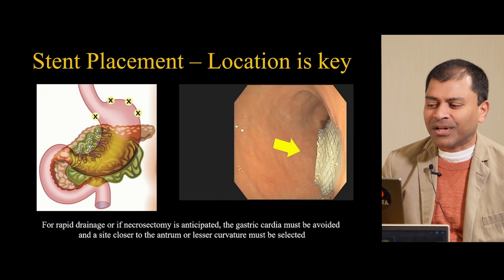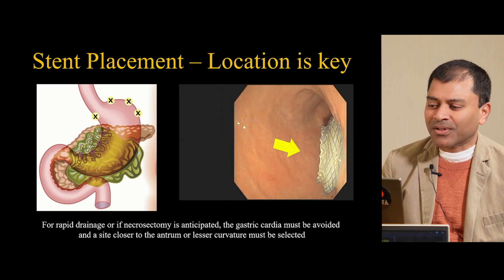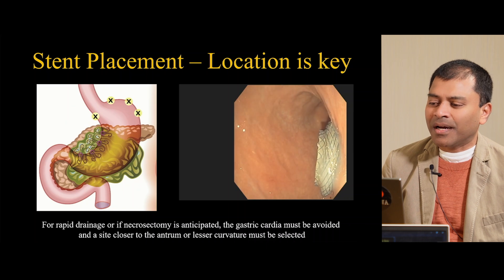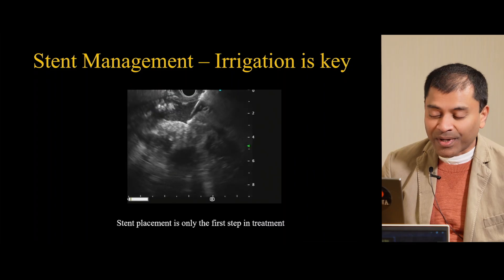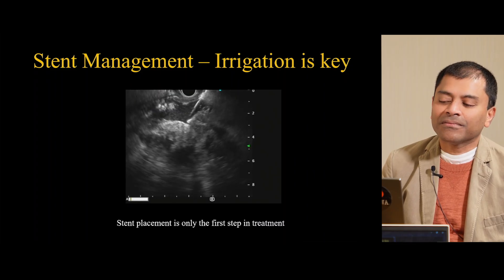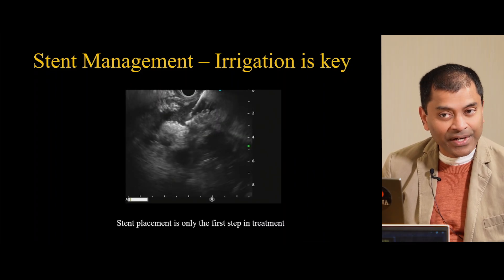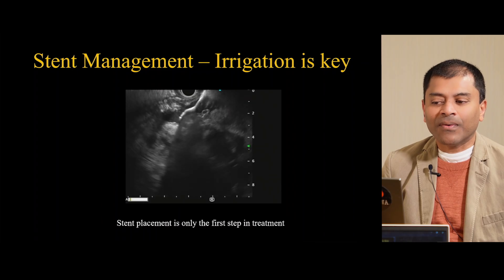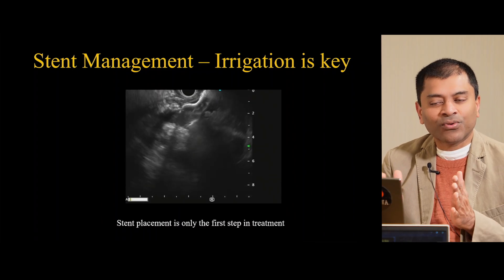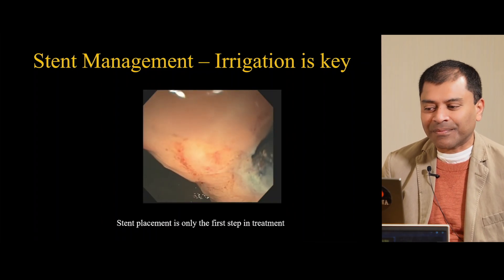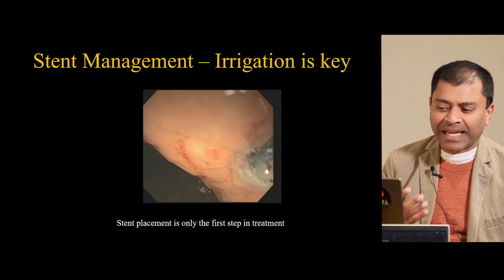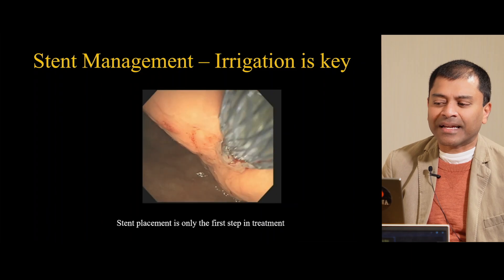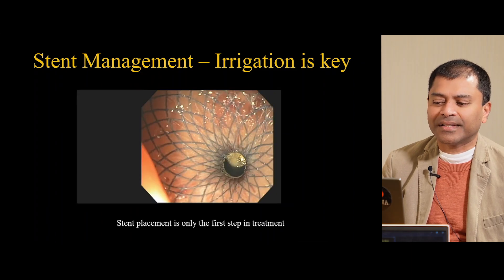I almost always place a 20-millimeter stent because it makes necrosectomy much easier — the lumen is large and you can use a therapeutic gastroscope. You now see the mid-stomach, which is a very easy place to intervene. It's also very important that when you place a stent, you irrigate very well. If you don't irrigate well, the debris will occlude the stent lumen and patients come back with sepsis in a few days. I spend about 15 minutes after placing a stent just for irrigation to extract as much mechanical debris as possible. This is very critical.